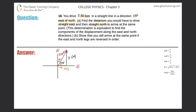Let's find the x component. We know the hypotenuse and the angle, and we're looking for the adjacent side, so we use cosine. Cosine of 75 degrees equals the x value over 7.50. Cross-multiplying: cosine of 75 times 7.5 works out to about 1.94 kilometers.